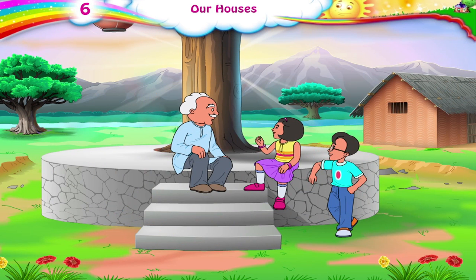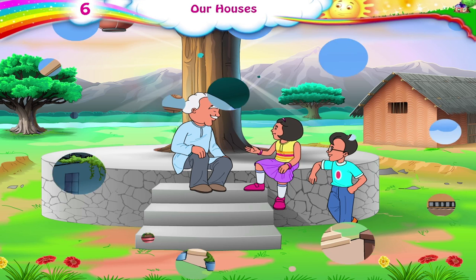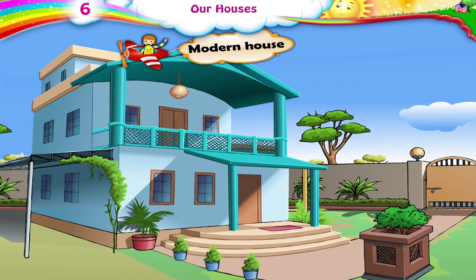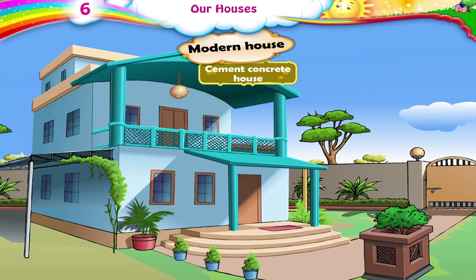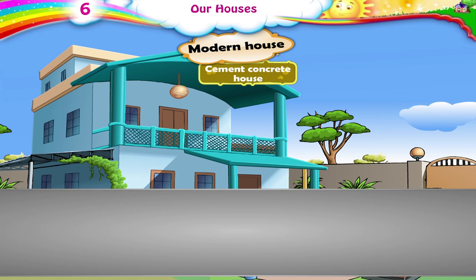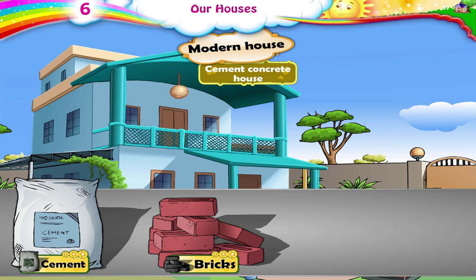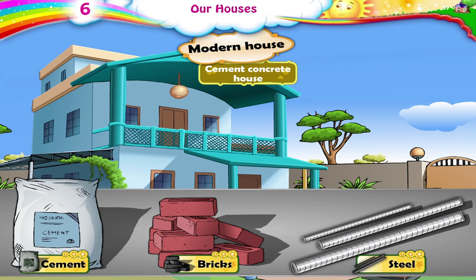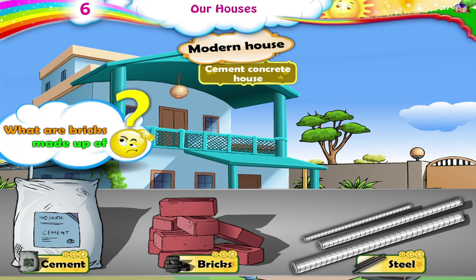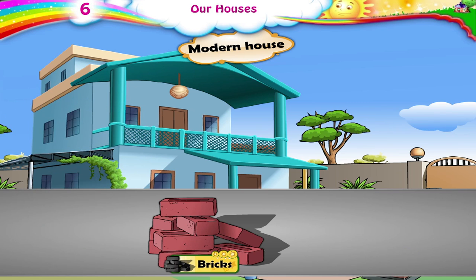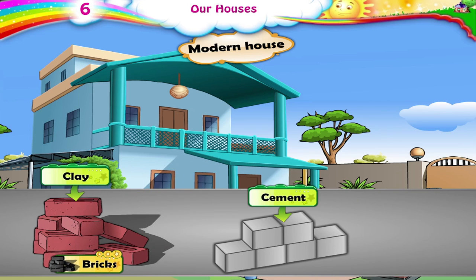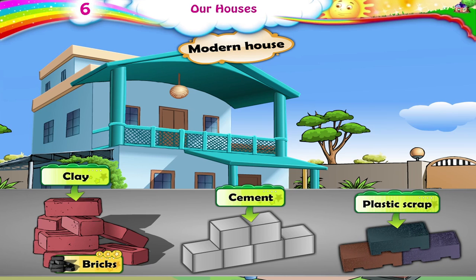Dadaji, what are modern houses built of? Most modern houses are cement concrete houses. A cement concrete house is built using cement, bricks, and steel. What are bricks made up of? The bricks are made of clay or cement. Nowadays, bricks made from plastic scrap are also used for building houses.